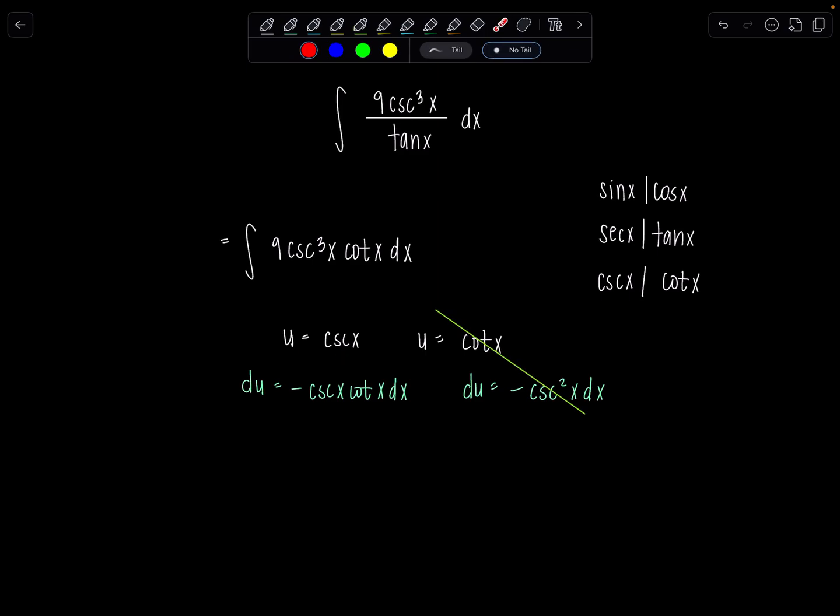If u is cosecant x, du is negative cosecant x cotangent x. Yeah, I can steal one of these away so that I can make this happen. And then I'd have u squared. That's totally fine. We love it. It's going to work out.